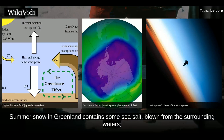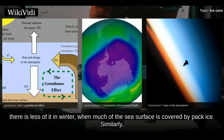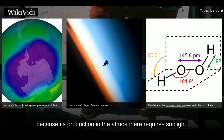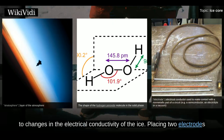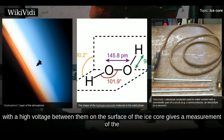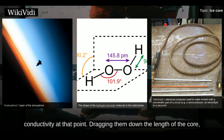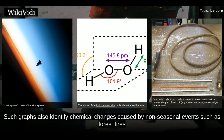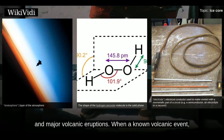Summer snow in Greenland contains some sea salt blown from the surrounding waters; there is less of it in winter when much of the sea surface is covered by pack ice. Similarly, hydrogen peroxide appears only in summer snow because its production in the atmosphere requires sunlight. These seasonal changes can be detected because they lead to changes in the electrical conductivity of the ice. Placing two electrodes with a high voltage between them on the surface of the ice core gives a measurement of the conductivity at that point. Dragging them down the length of the core and recording the conductivity at each point gives a graph that shows an annual periodicity. Such graphs also identify chemical changes caused by non-seasonal events such as forest fires and major volcanic eruptions.